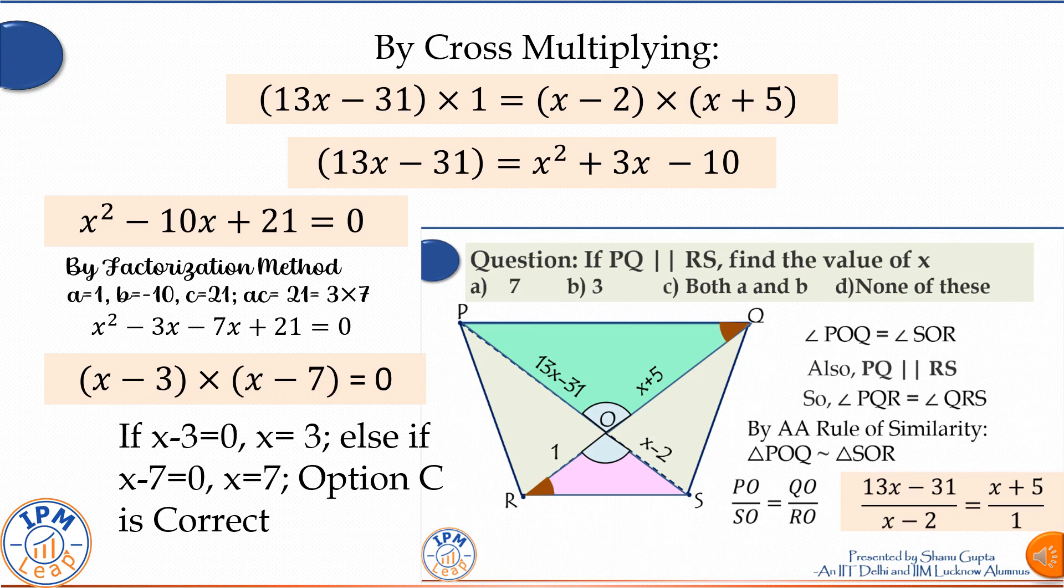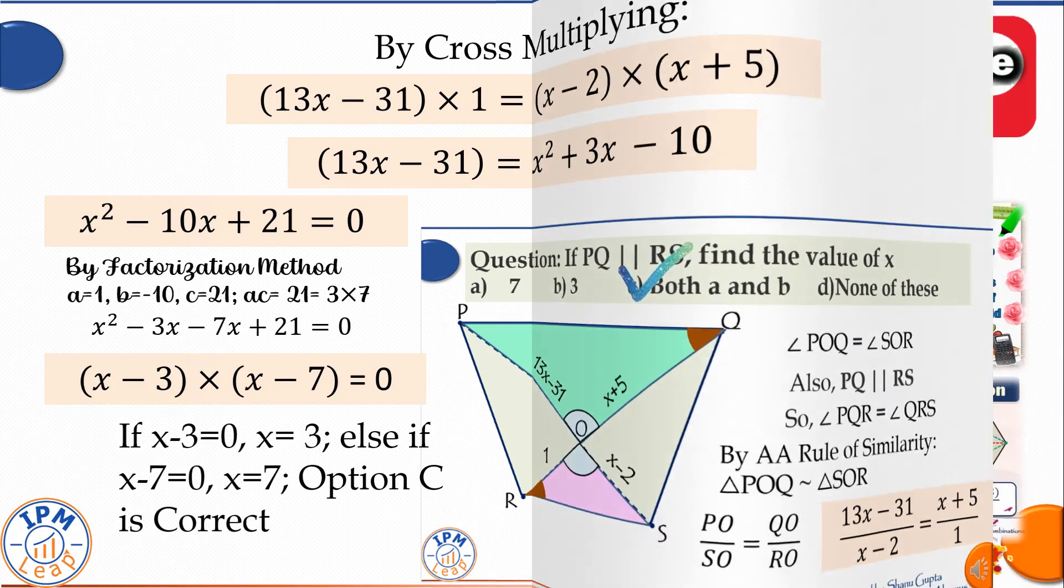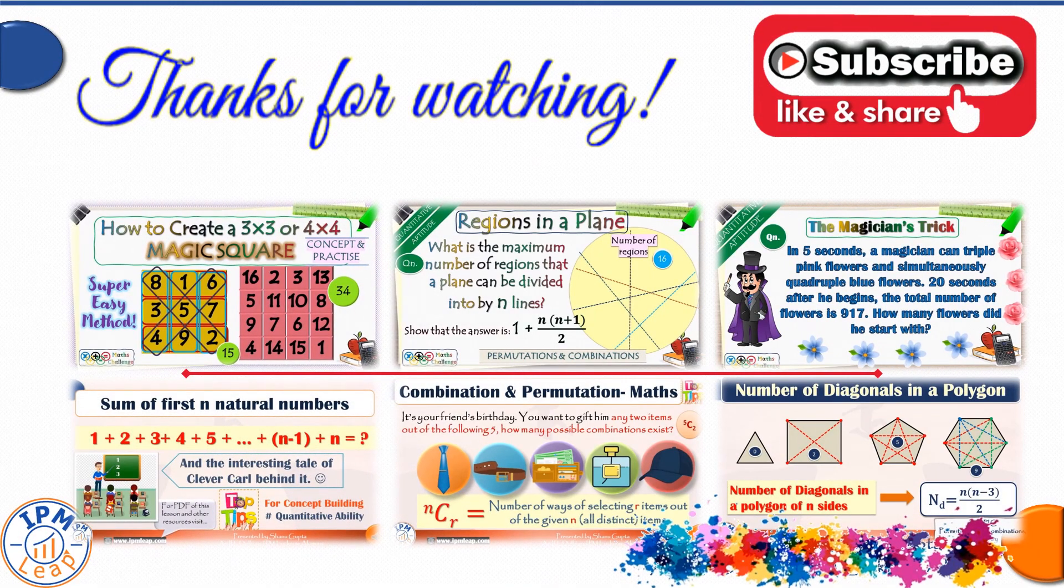This tells us that x can take both values 3 and 7. Therefore option C is correct, and that completes our math challenge.